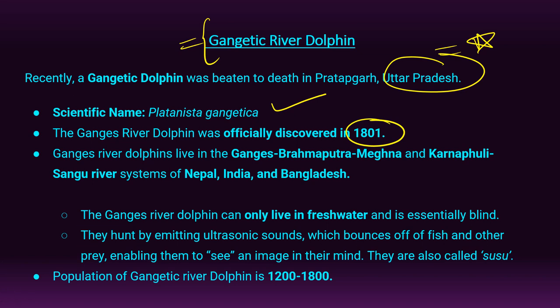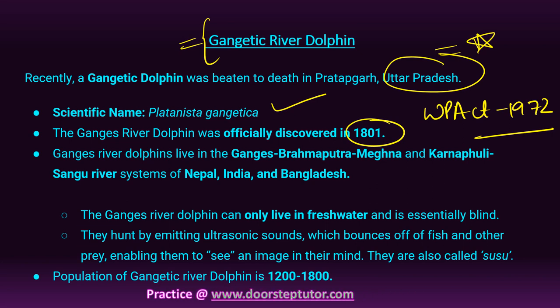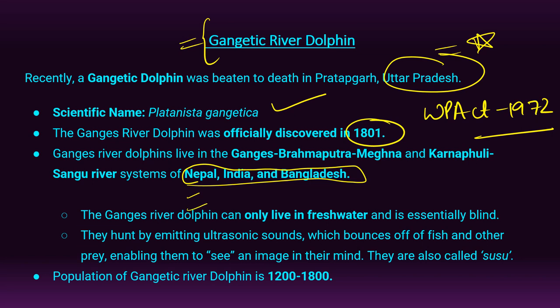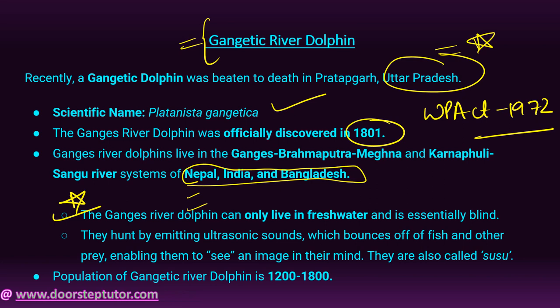Gangetic River Dolphins live in the Ganges-Brahmaputra, Meghna, and Karnaphuli-Sangu river systems of Nepal, India, and Bangladesh. The Ganges River Dolphin can only live in fresh water and is essentially blind. They hunt by emitting ultrasonic sounds which bounce off fish and other prey, enabling them to form an image in their mind. They are also called Susu. The current population is around 1,200 to 1,800.